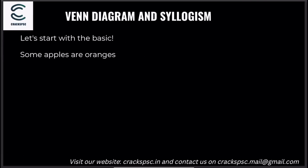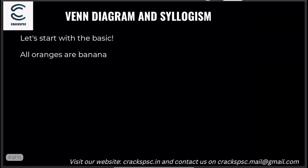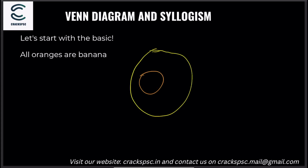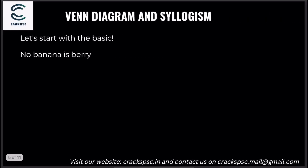Let's start with the basics. Some apples are oranges — so apples and oranges overlap. These are oranges, these are apples. Now another basic: all oranges are bananas. So orange has to be inside banana. Then: no banana is a berry — so banana and berry have no contact, they don't touch.